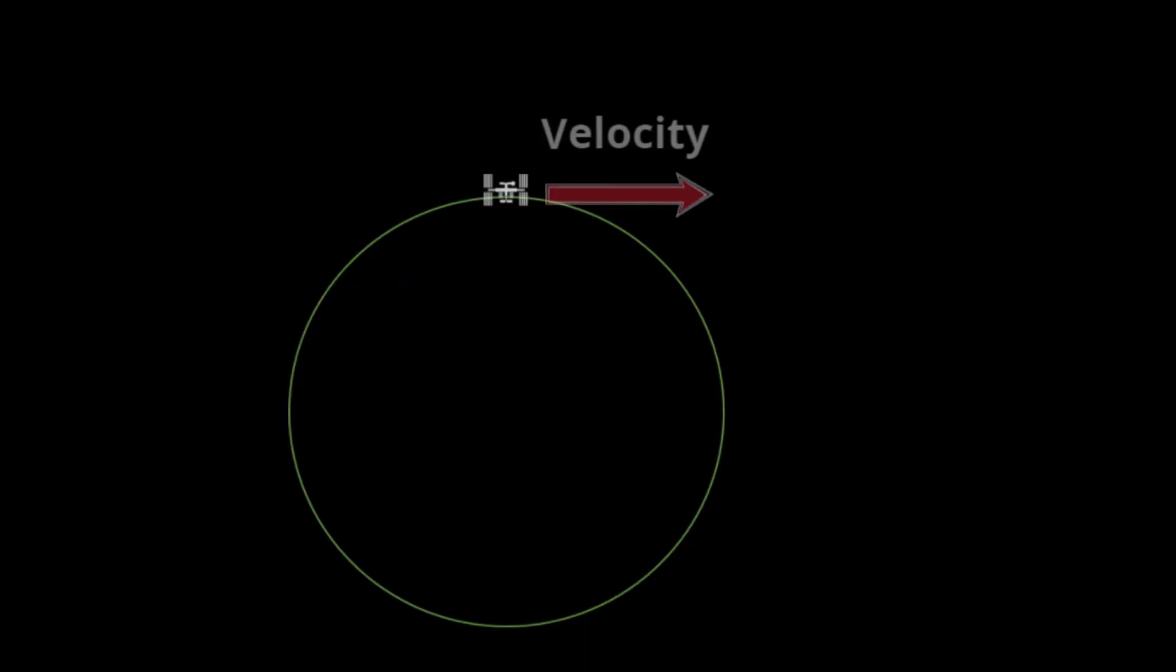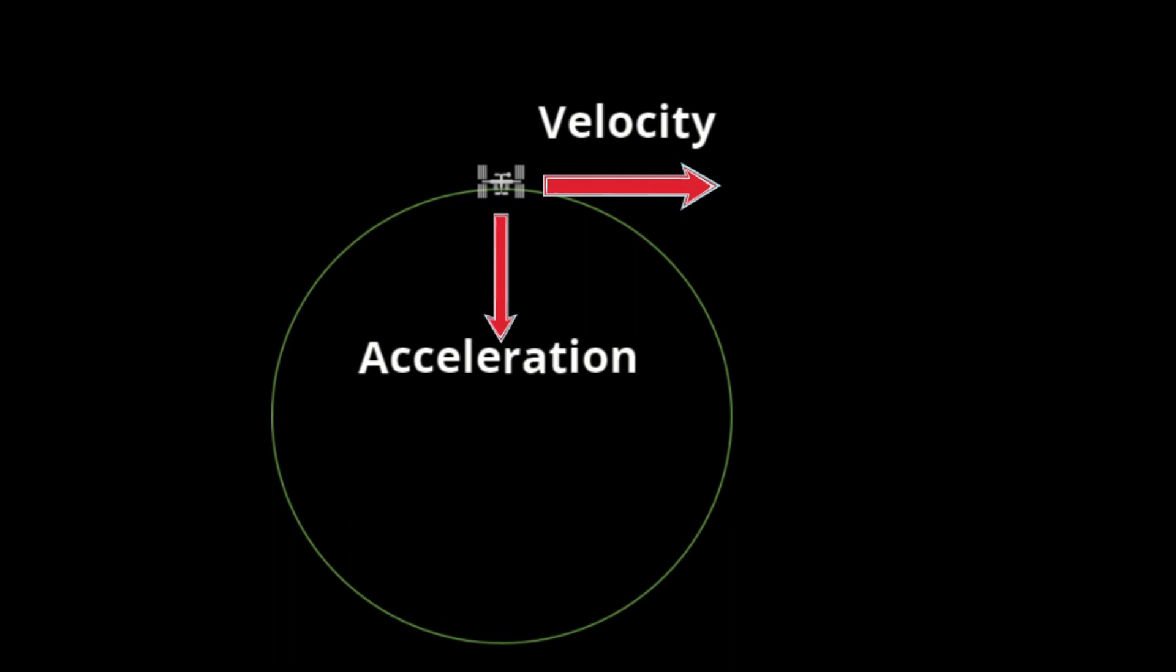That is because the ISS is falling towards the Earth. It is just moving sideways so quickly that instead of falling straight down, it follows a nearly circular path, completing an orbit around the planet.